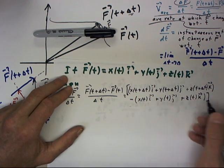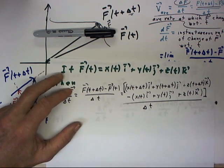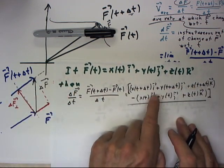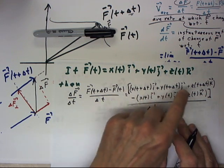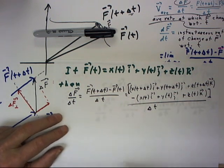And then we'll indicate that all that is divided by delta t. So we've just written literally out what f of t plus delta t is, what f of t is, and written them in the appropriate places within this expression.